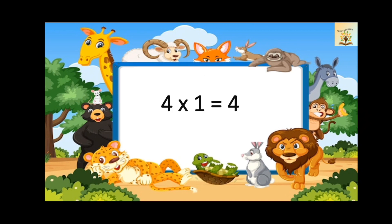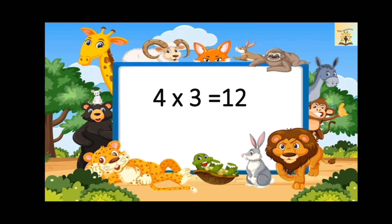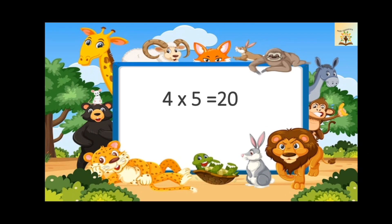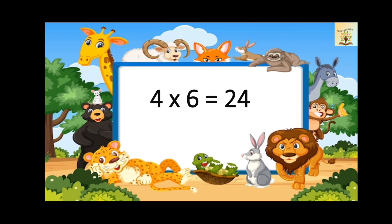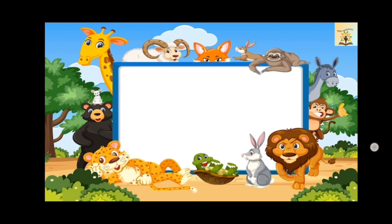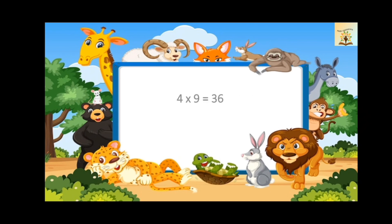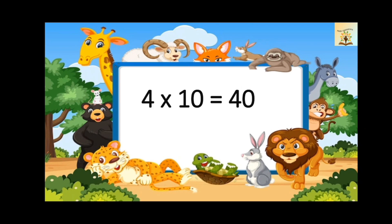Four ones are four. Four twos are eight. Four threes are twelve. Four fours are sixteen. Four fives are twenty. Four sixes are twenty-four. Four sevens are twenty-eight. Four eights are thirty-two. Four nines are thirty-six. Four tens are forty.